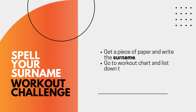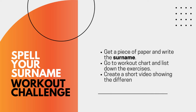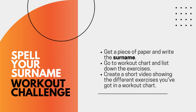You have to get a piece of paper and write your surname — for example, my surname, which is eight letters. Then I have a workout chart that I will show you. You will look at it to see what exercises to do for each letter of your surname. Create a short video showing the different exercises you got from the workout chart — you heard it right, you will make a video and capture yourself while doing the exercises listed for you.